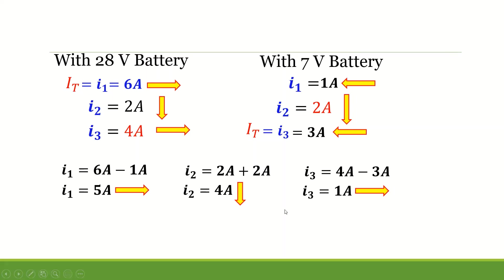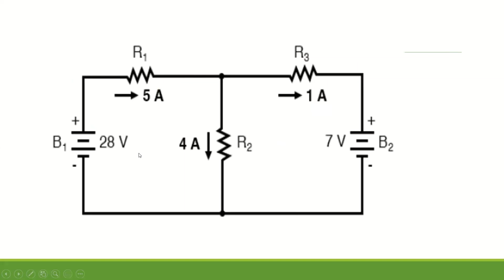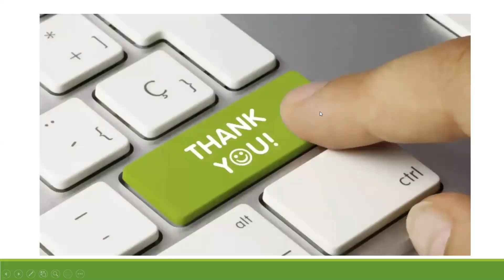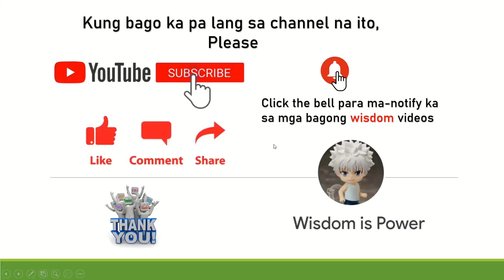To summarize: the current flowing in R1 (I1) equals 5 amperes, the current flowing in R2 (I2) equals 4 amperes, and the current flowing in R3 (I3) equals 1 ampere. That's how the superposition theorem works. Thank you very much, and if you are new to my channel, please subscribe and click the bell button so that you will receive videos like this.